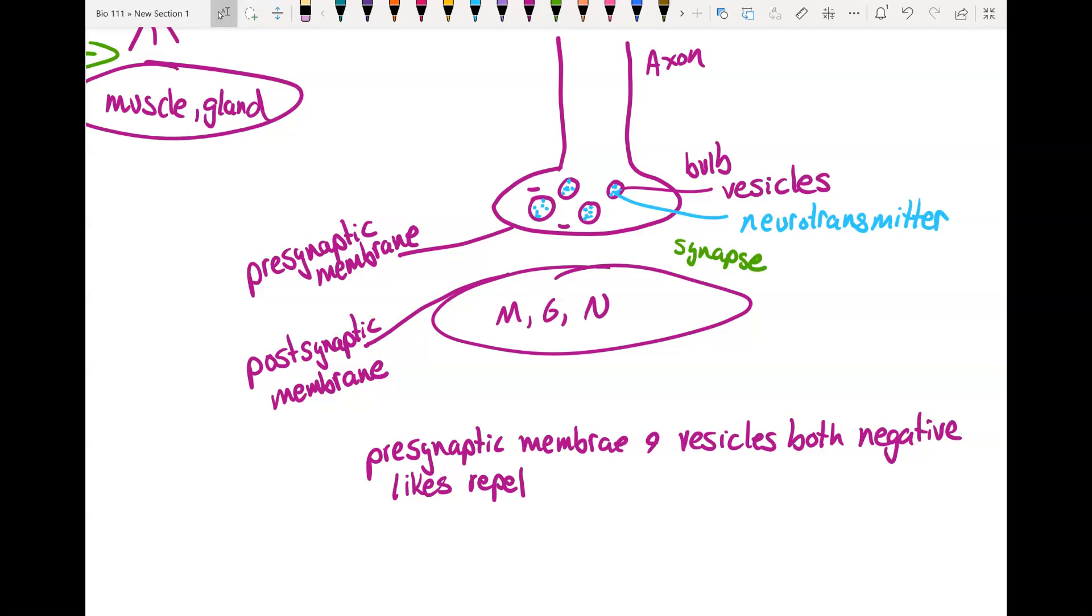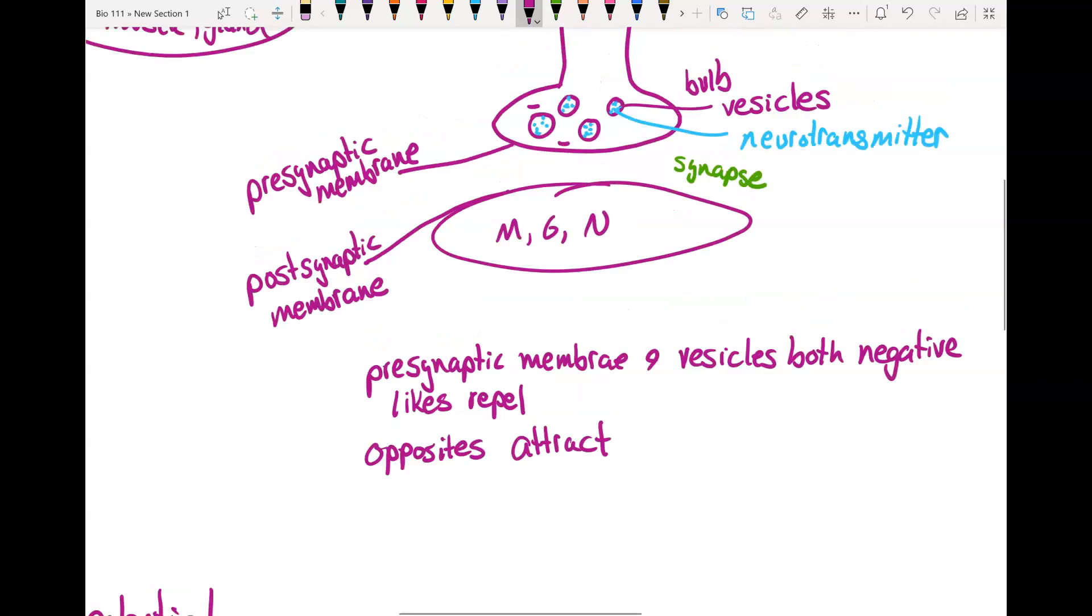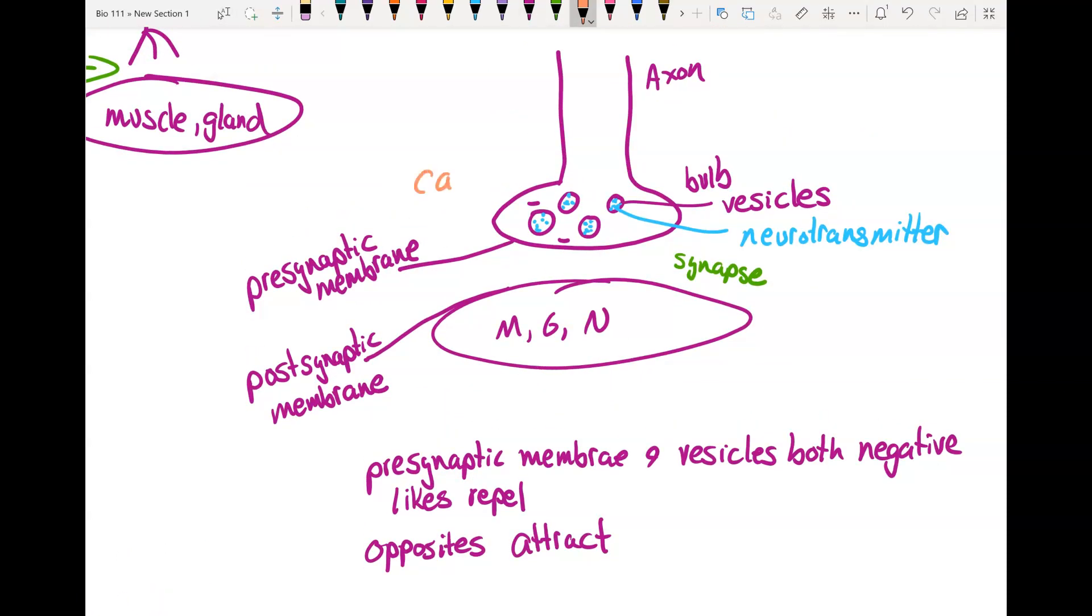Well, if likes repel, remember opposites attract. So we need to get those vesicles to be positive. You do that with calcium. Calcium is a cation. It has a positive 2 charge. So when that action potential, so we have an action potential here in the axon. When the action potential gets to the end of the axon, it makes calcium gates here in the knob open. And calcium comes in and that calcium coats these vesicles and makes them positive.